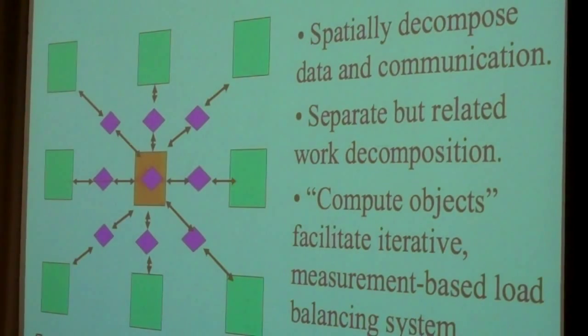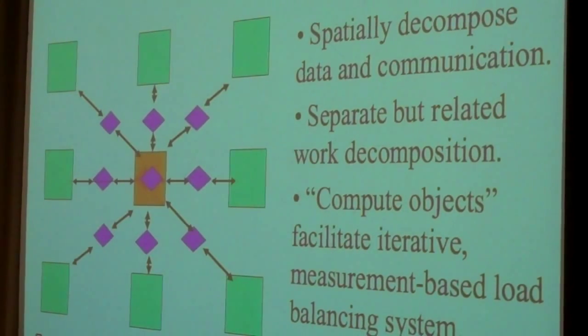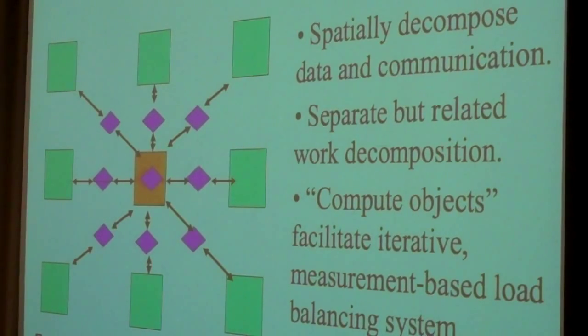In NAMD I, each of these domains was treated as its own little processor — it would import data from its neighbors, calculate, and return things back. That had a load balancing issue. We found we could do better by treating the data in each cube as one operation where the data lives, and then representing the interaction between any neighboring pair of cubes as a separate class of objects called compute objects that actually calculate those forces.